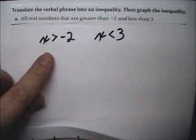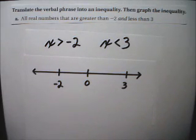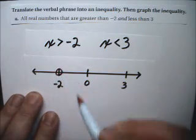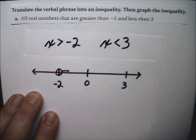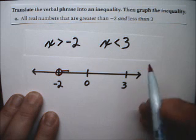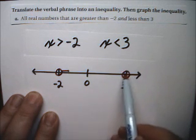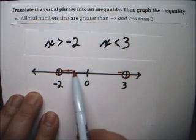Before I do that, let me show you the graph, because this is kind of important. It says X is greater than negative 2, so there's my open circle on the negative 2, and it's everything this way. X is less than 3, so it's an open circle on the 3, and it's everything this way.